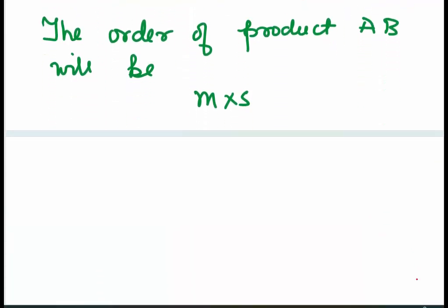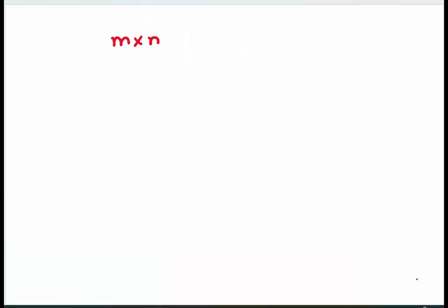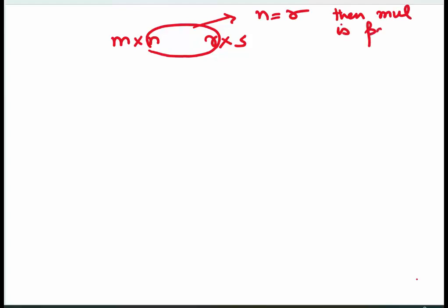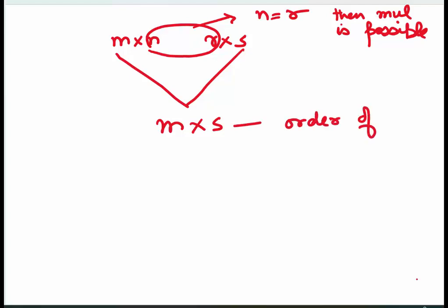Let me explain this once again. If the order of the first matrix is M by N and the order of the second matrix is R by S, then they can be multiplied if and only if N is equal to R — the inside numbers must match. The order of the resultant matrix AB is given by the outside numbers, M by S.